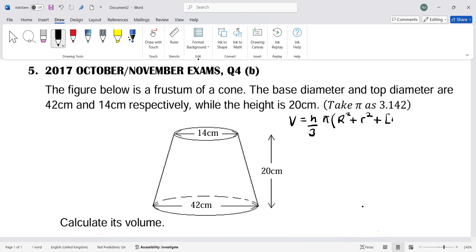Since the diameter on top is 14, the radius on top (small r) will be 7, because radius is half the diameter. The diameter on the bottom is 42, meaning the radius at the bottom (capital R) will be 21. Now I'll substitute these values into the formula.